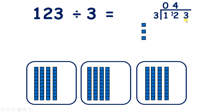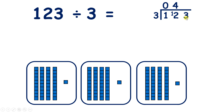Now we can divide our 3 units. If we share out those units, we have 1 unit in each group, because 3 divided by 3 is 1. So 123 divided by 3 is 41.